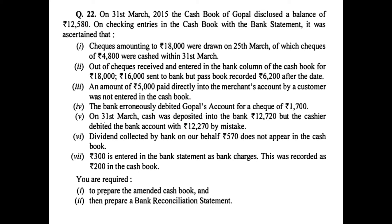Point six: dividend of 570 rupees collected by the bank on our behalf does not appear in the cash book. This 570 was added in the pass book by the bank but was not recorded in the cash book. It is an error in the cash book which will be rectified in the amended cash book — it will be shown on the debit side as it is an addition.